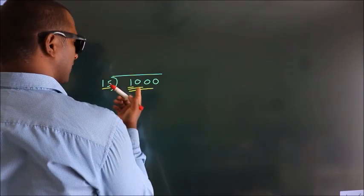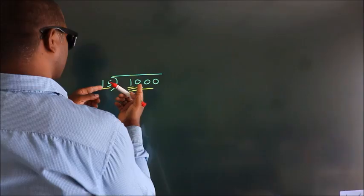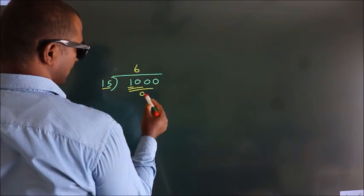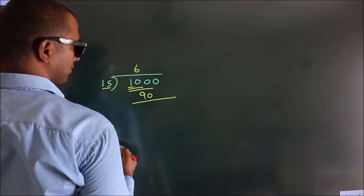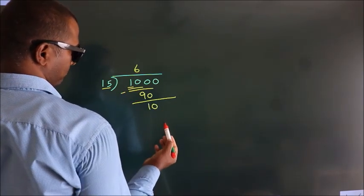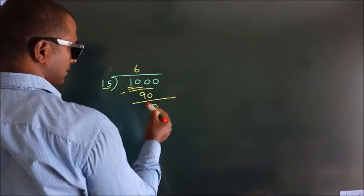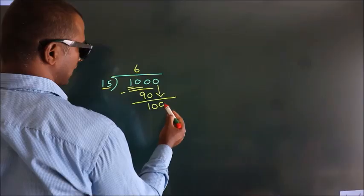100. A number close to 100 in the 15 table is 15 times 6, which is 90. Now we should subtract, and we get 10. After this, bring down the next number. So bring 0 down.